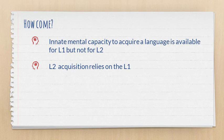So the question is, how come? What explains this difference? In the case of the first language, the innate mental capacity to acquire language is available. But in the case of second language learners, especially adult second language learners, that is not the case.